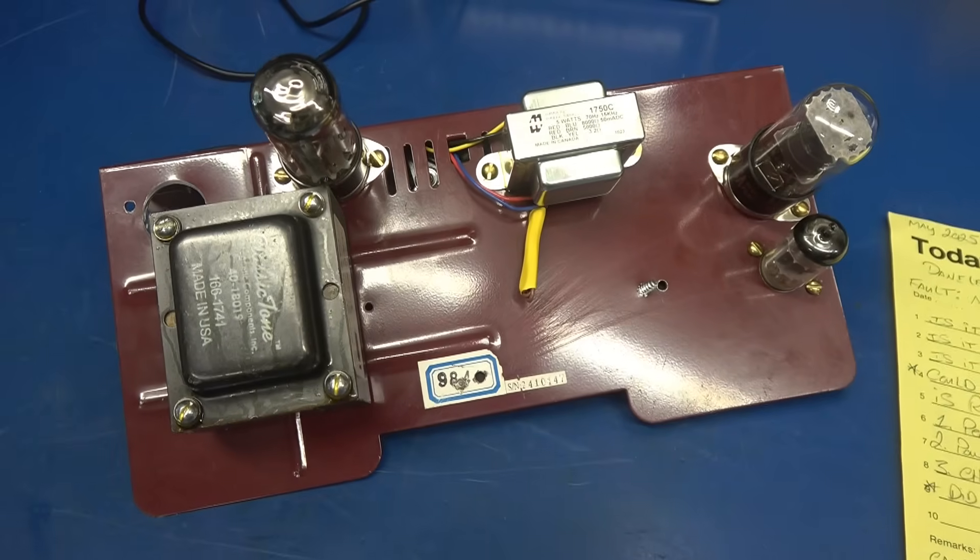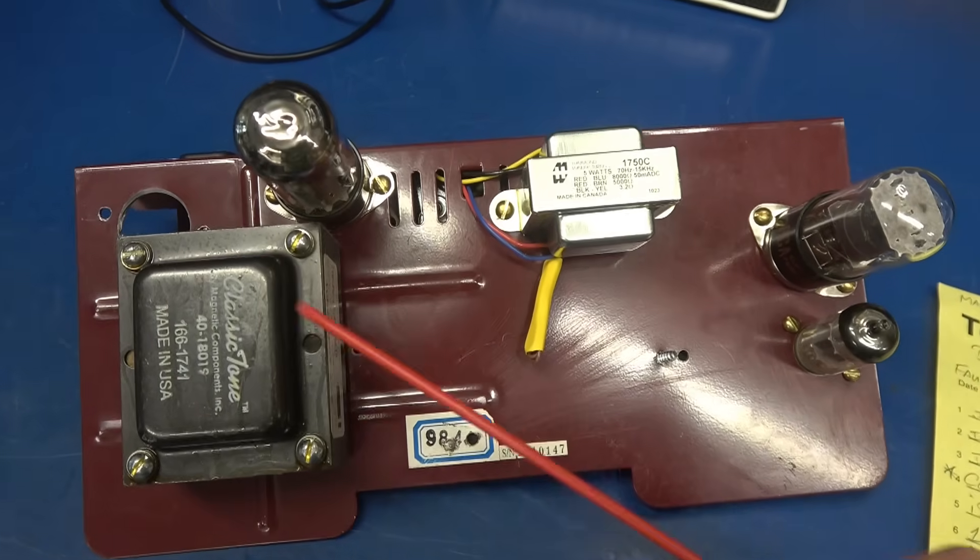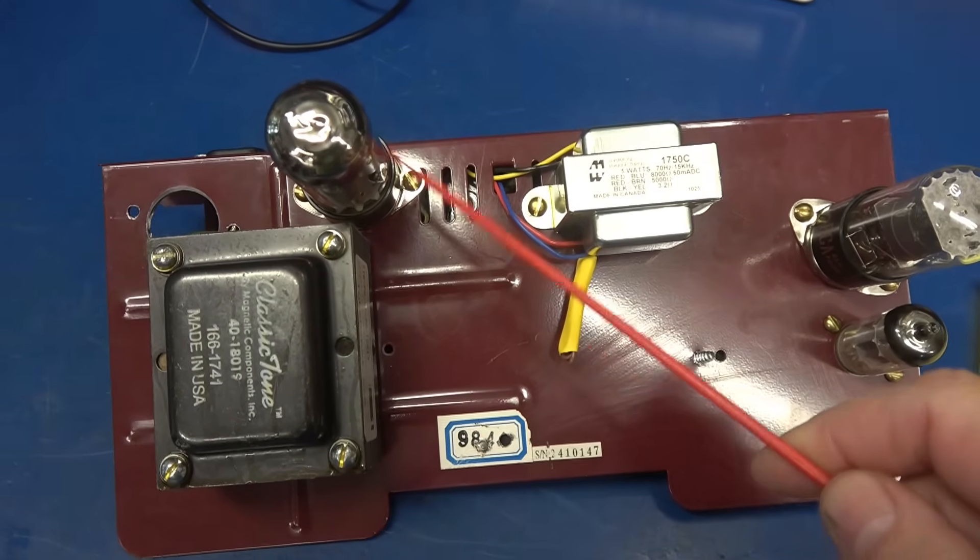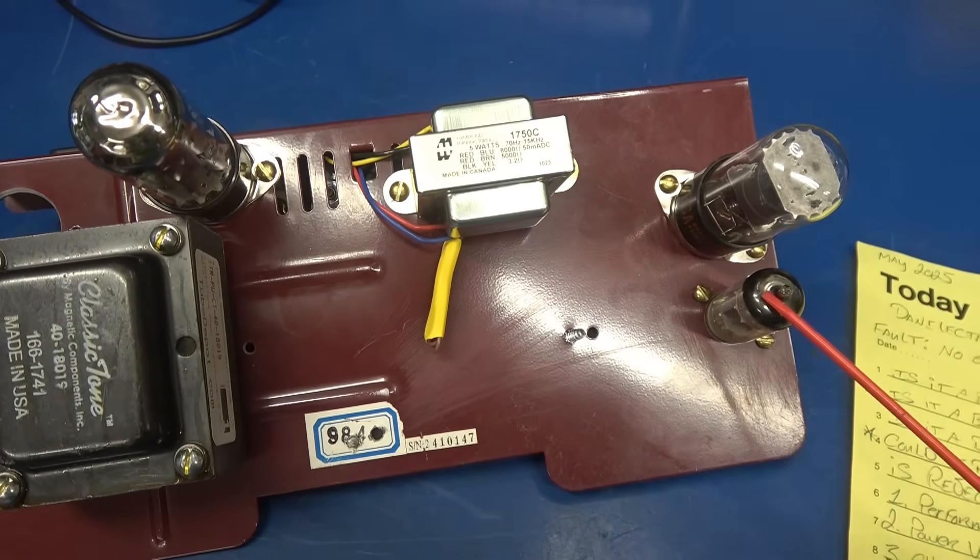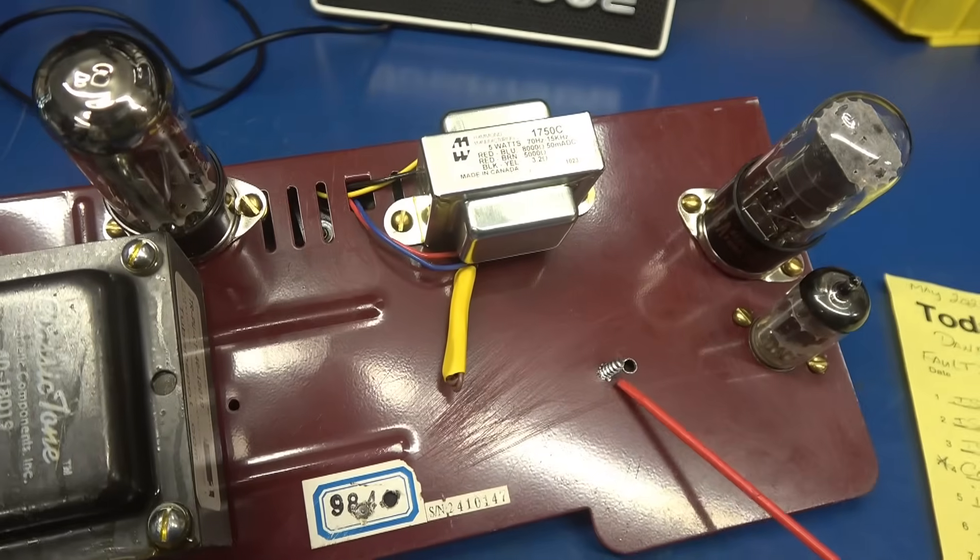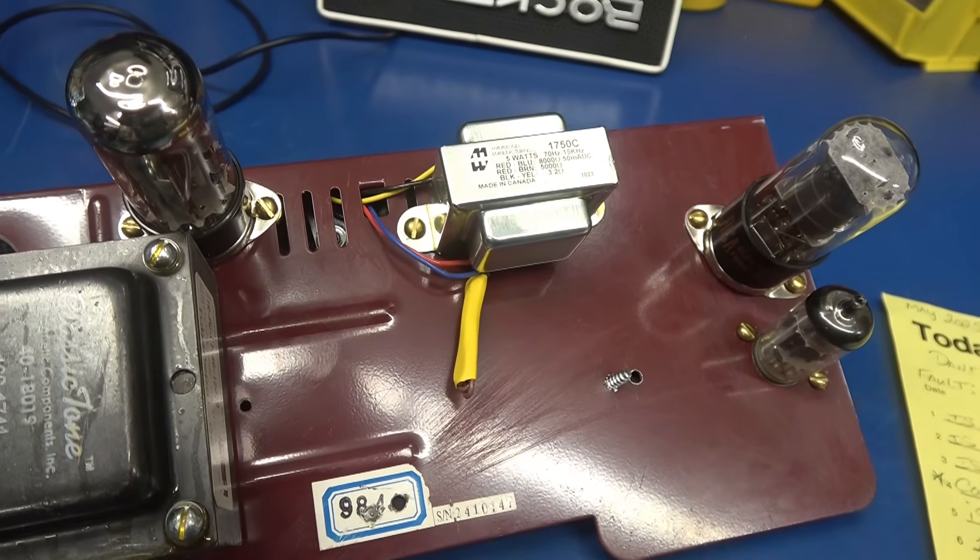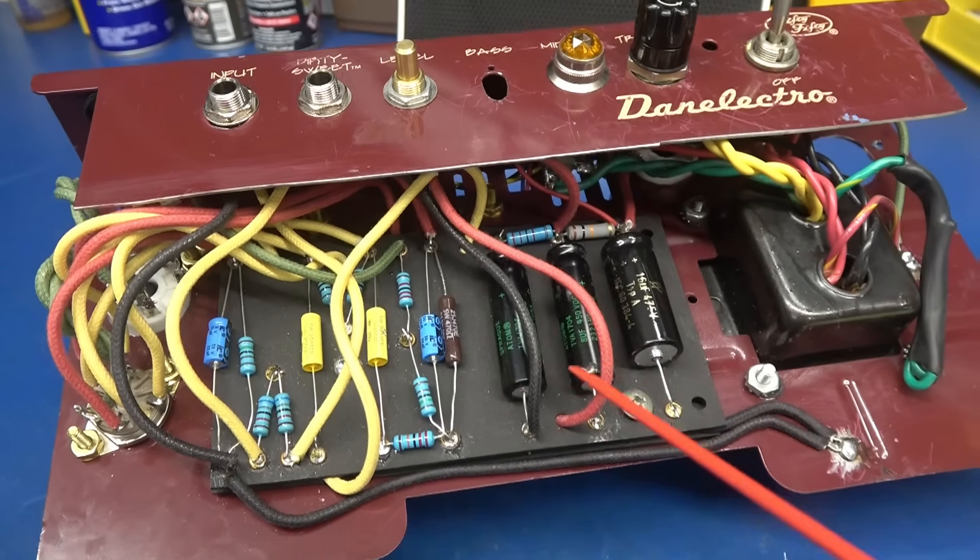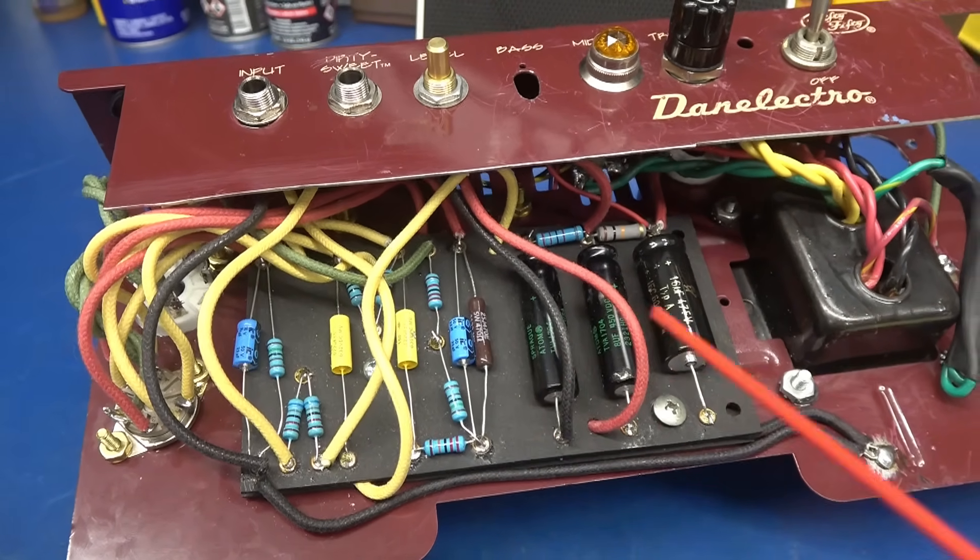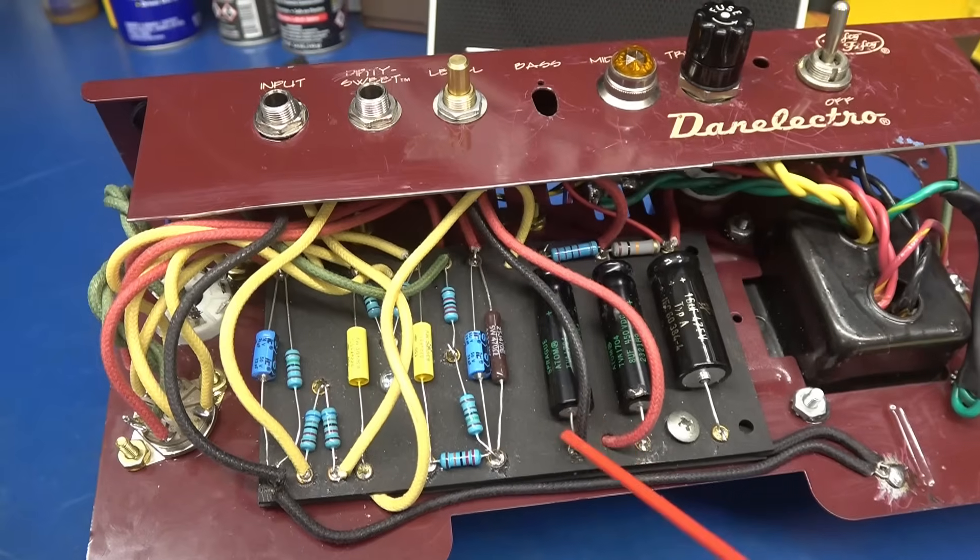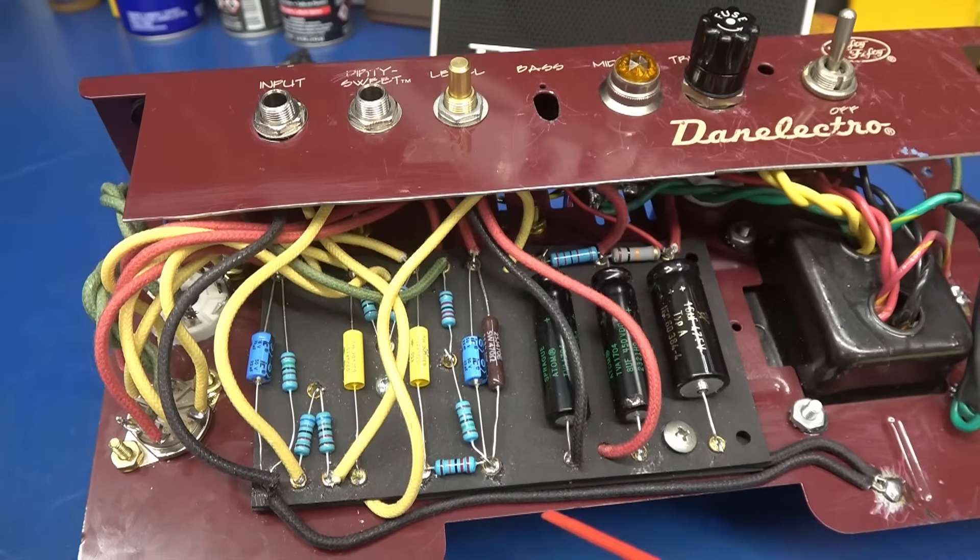This is a 5F1 design. It's my power transformer, 5Y3 rectifier, Hammond output transformer, 6V6, 12AX7, and of course the tooth sticking out of the chassis. Omar utilized a standard 5F1 eyelet board. This design should be per the print that you can find online for free.